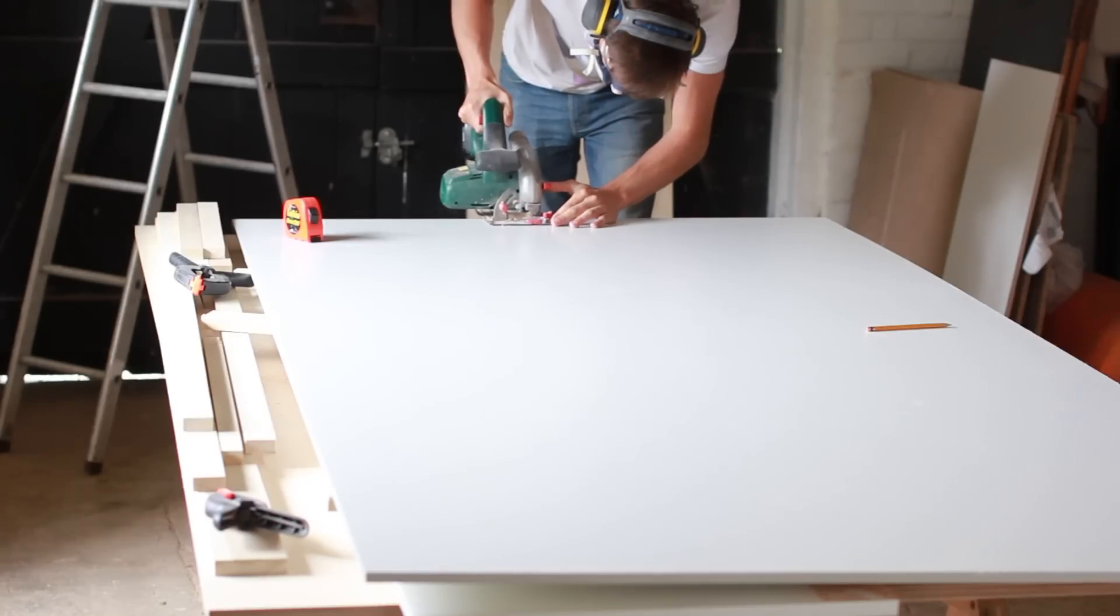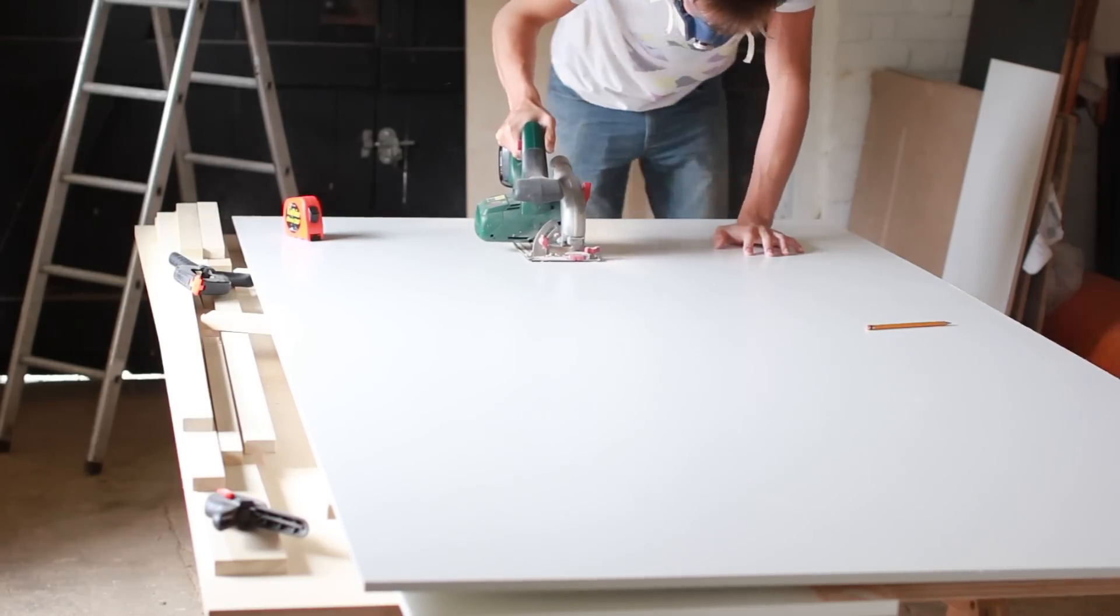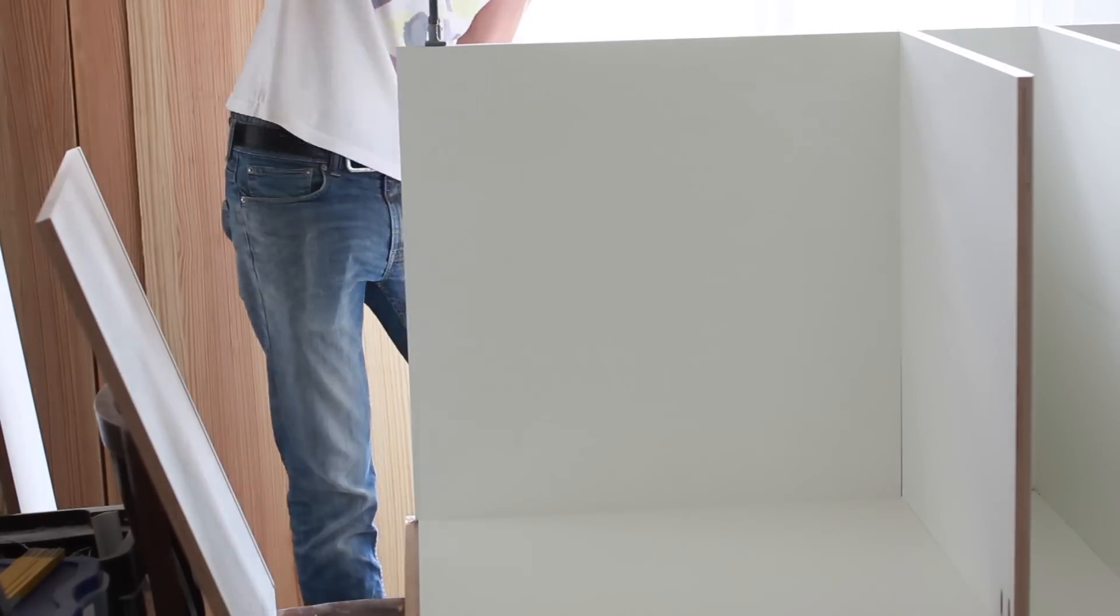Moving on to the back panels, I rough cut them from half inch melamine faced ply and trimmed them to size on the table saw. I installed the panels using clamps to ensure that they seated properly in their dados.